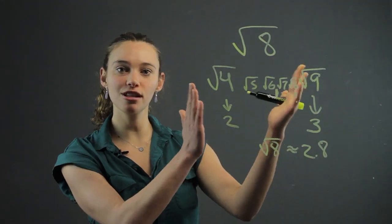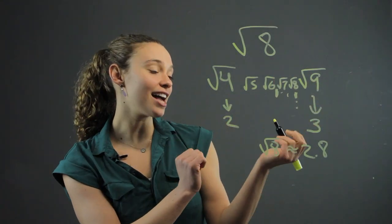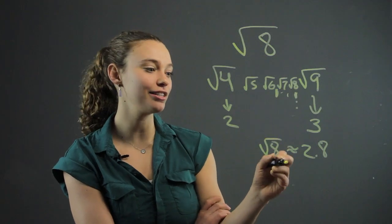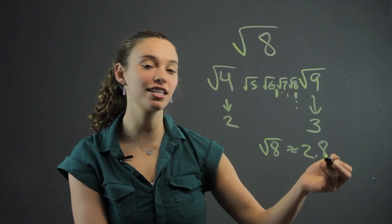And I just use the perfect squares on the sides to guess and estimate where I think square root of 8 is going to be. And it turns out it is approximately 2.8.